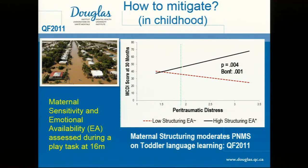What about in childhood? A woman has been through a horribly stressful pregnancy — now she has a toddler, maybe with problems. What can the mom do? When kids were 16 months of age, they did a task with their moms that we videotaped and rated for the mom's emotional availability, including a structuring subscale measuring how well the mom helps the child structure their task.